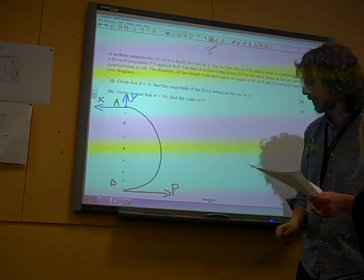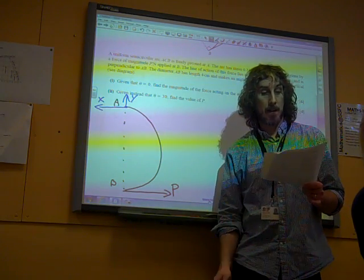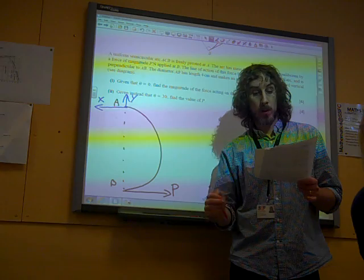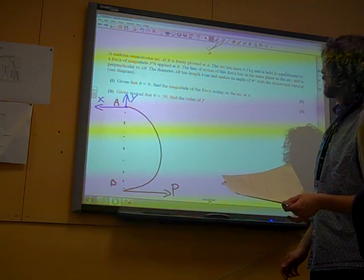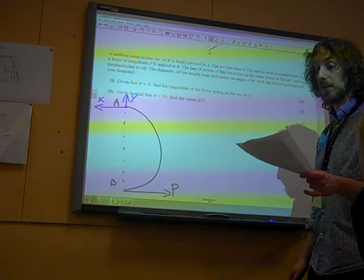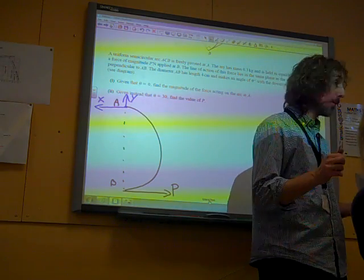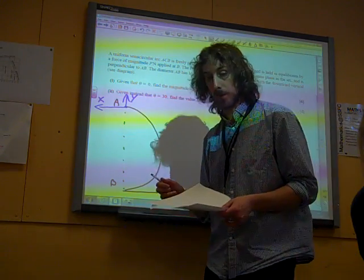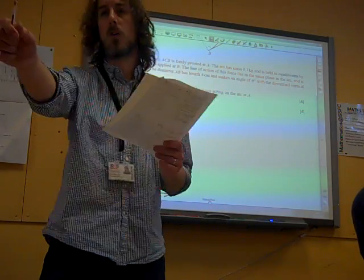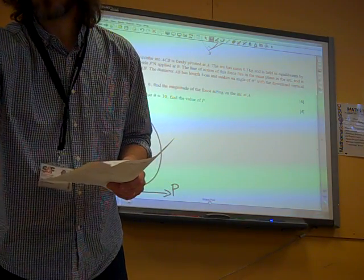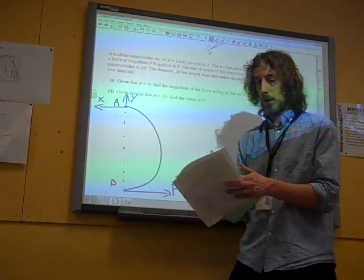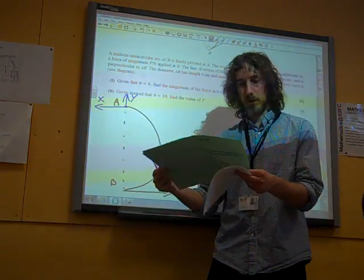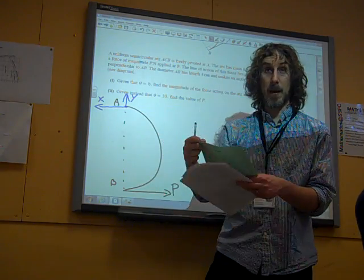So we've got something missing from this. There would be the weight of this, wouldn't there? The arc has mass 0.3 kilograms, so we need to add that as well. We go to our formula booklet. We're going to turn to the relevant page, which is page 6. We're going to look at centers of mass.